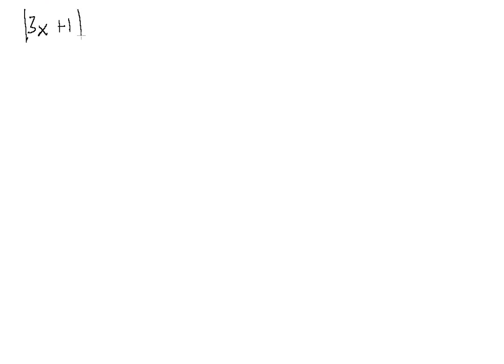We have the absolute value of 3x plus 1 is less than or equal to 4. We saw in the previous sections that when we have a less than or equal to sign, this gives us an AND inequality. We're going to split this absolute value inequality into two separate ones, dropping the absolute value bars and taking the expression 3x plus 1, which will have two possibilities.